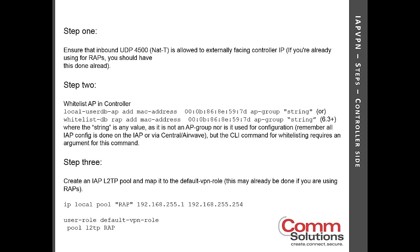The second step is to whitelist the AP in the controller. The syntax has changed — prior to 6.3 you use the 'local user db ap' command to add the MAC address; past 6.3 it's the 'whitelist db' command. You'll also note there's an 'ap group' string as part of this command. Because it's an IAP cluster acting as a VPN endpoint — not a traditional remote AP or campus AP — that string can be any value. It's not a real AP group and isn't used for configuration; all IAP config is done via the IAP itself or via Central or Airwave.